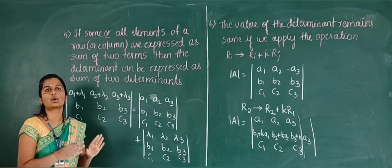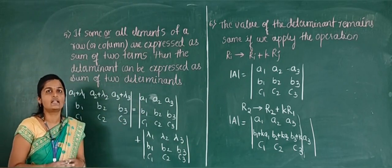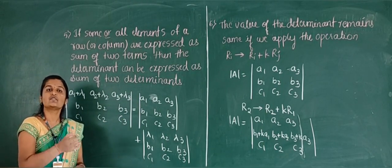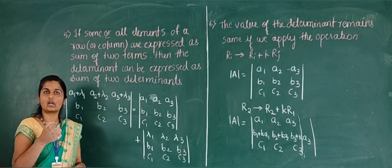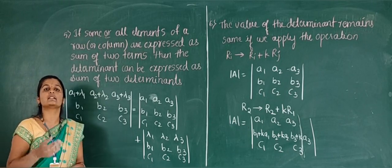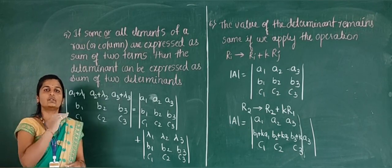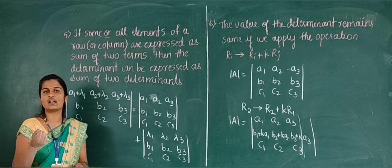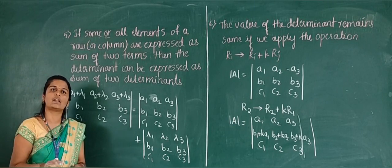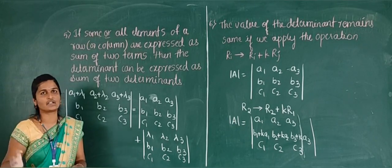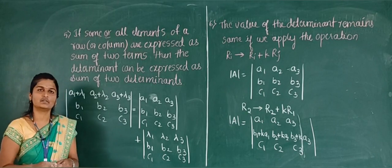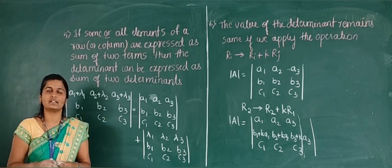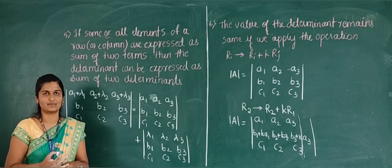These are the six main properties of determinants. There is one additional note: if all the elements of any row or column of a determinant are equal to zero, then the determinant value is equal to zero. Today we have studied the properties of determinants, and in the next class we will move to the next part. Thank you.